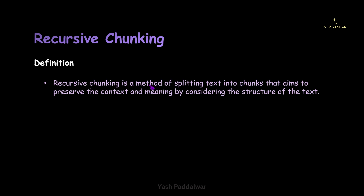So let's have a look into the official definition of recursive chunking. The definition says that recursive chunking is a method of splitting the text into chunks that aims to preserve the context and meaning by considering the structure of the text. So here it not only focuses on the size of each chunk, but also focuses on preservation of meaning by considering the structure of the text — it gives respect to the structure of the text.